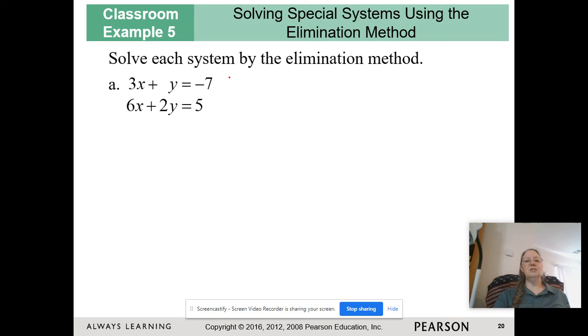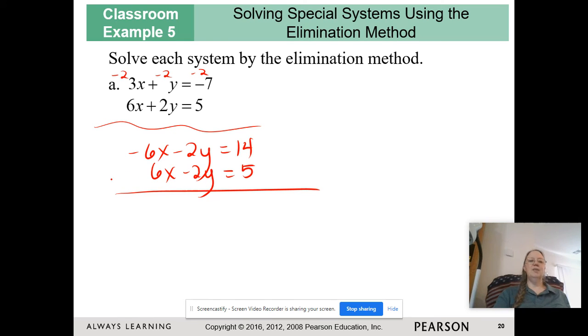So, this one, I'm going to multiply the top equation by negative 2. So, I have negative 6x equals 14. I'm going to add them together. And, there we go. Make sure I write it down correctly. I end up, on the left side, I got 0x's and I have 0y's.